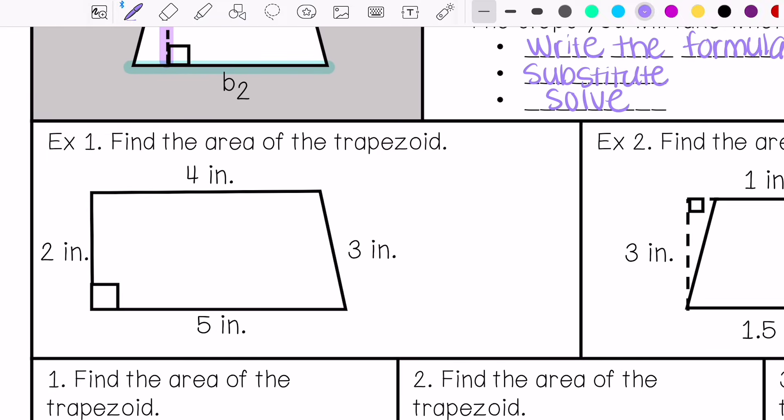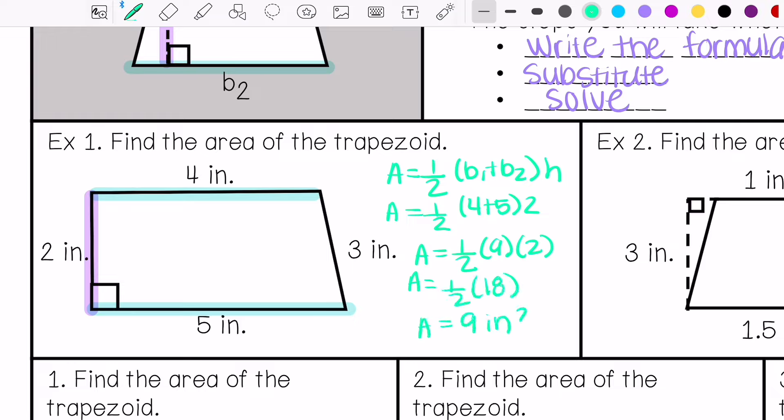Let's do example number 1. It says find the area of the trapezoid. So I'm going to identify the height, which is right here. It makes the right angle with the base. And then I have base 1 and base 2. So I'm going to start with my formula, substitute what I know, and then I'm going to solve this.